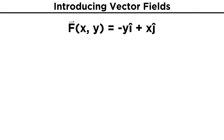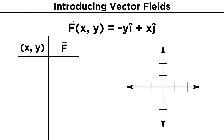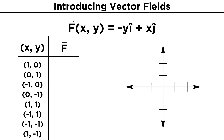For a quick example, consider the vector field f(x, y) = -yi + xj. To get an idea of how this vector field looks, let's plug in a few coordinates and plot our resultant vectors. We will take a few simple coordinates of the form (x, y) and plug them into the vector field. To start, consider (1, 0): here x equals one and y equals zero, so we get back the vector 0i + 1j, or (0, 1). We will now plot this vector originating from the coordinate we plugged in, (1, 0).